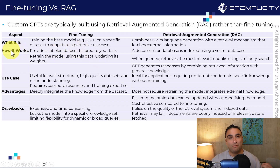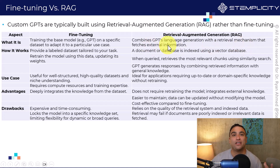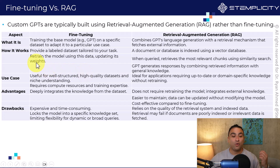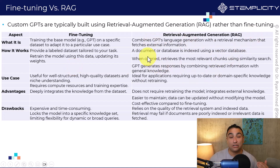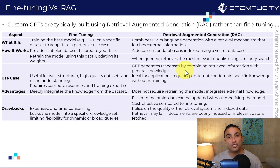How does RAG compare to fine-tuning? With fine-tuning, you train the base model on specific datasets to adapt it to a particular use case, providing labeled data and retraining the model by updating its weights. With RAG, you combine the LLM's language generation with a retrieval mechanism that fetches external information. A document or database is indexed using a vector database, a query retrieves the most relevant chunks, and the LLM generates responses by combining retrieved information with its general knowledge.